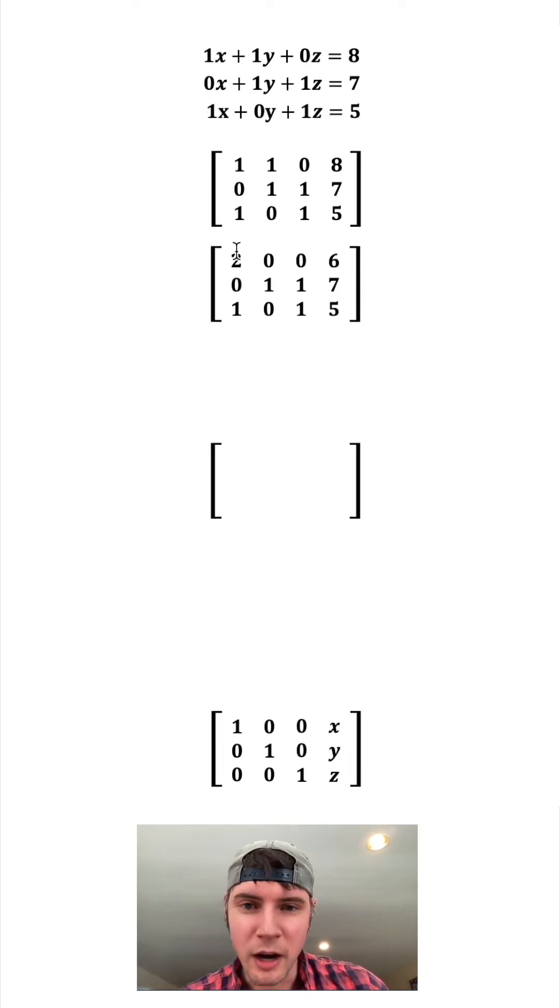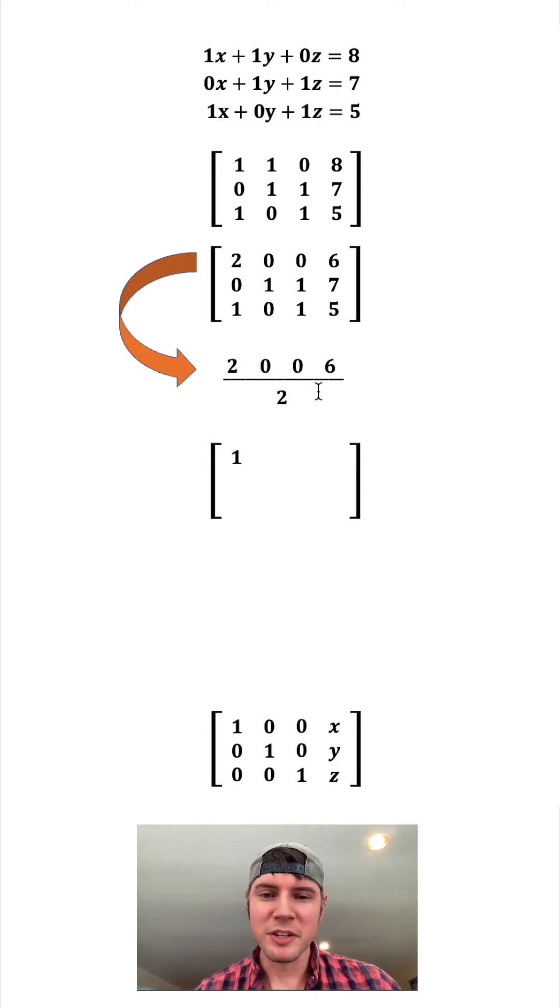Now for our next matrix, I want this 2 to change into 1, so I'm just going to take that first row and divide everything by 2. 2 divided by 2 is 1, and both these zeros divided by 2 are 0, and 6 divided by 2 is 3. Now I'll just copy these other two rows down.